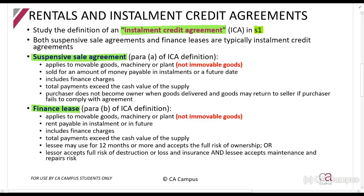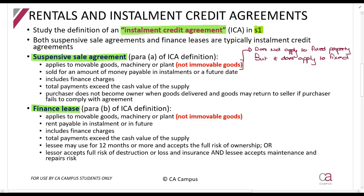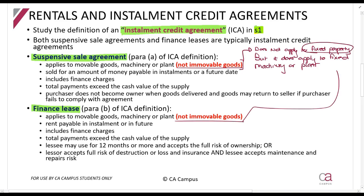The definition tells us it applies to movable goods, machinery or plant — movable or immovable. It does not apply to fixed property, but it does apply to fixed machinery or plant. So a massive machine in a factory that is bolted into a foundation is still covered. The most important point: it does not apply to fixed properties like buildings and land.